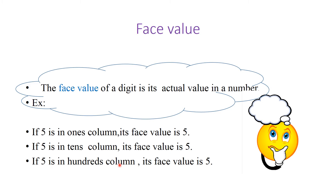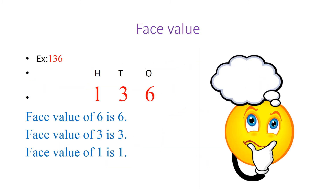If 5 is in the 100's place, its face value is still 5. Now let us see an example based on face value. The number is 136. What is the number in the 1's place? It is 6. The face value of 6 is 6. 3 is in the 10's place, but we take the actual value — the face value of 3 is 3. 1 is in the 100's place, but the face value of 1 is 1.